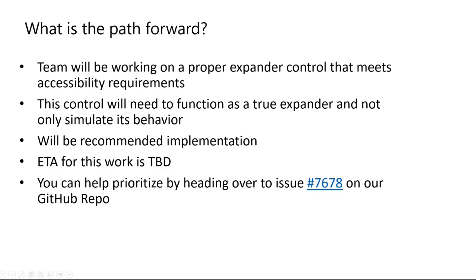Issue number 7678 is the feature request for the Action.ToggleVisibility work. It would be super helpful for our team to know how you're currently using Action.ToggleVisibility, if you even are, and what you'd like to see in the future implementation of the expander control. As a reminder, this will not break existing Action.ToggleVisibility implementations — it's more of a formality change in our documentation indicating we won't be updating it and will work on a better implementation instead.